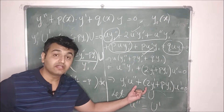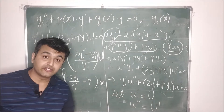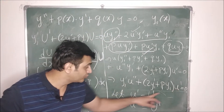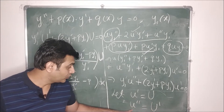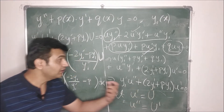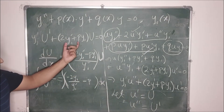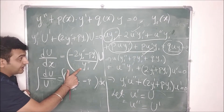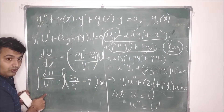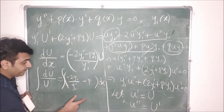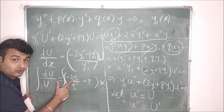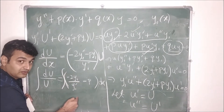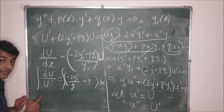We now have a differential equation in u' and u'' only. To reduce to first order, substitute U = u', so u'' = U'. This gives y1·U' + (2y1' + p·y1)·U = 0. Writing U' = dU/dx and separating variables, we get dU/U = −(2y1'/y1 + p)dx. The right-hand side contains only x, since y1 and p are functions of x, so we can integrate using variable separation.